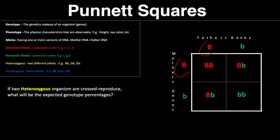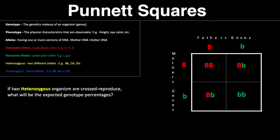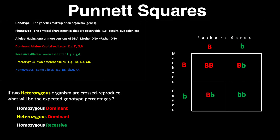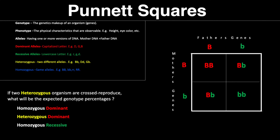To reiterate: if you take a capital B from mom and a capital B from dad, you get two capital Bs. If you take a capital B from mom and a lowercase b from dad, you get one capital B and one lowercase b in the second and third squares. And in the fourth square, you get two lowercase Bs. To calculate genotype: how many homozygous dominants are present? Only one — and since one box equals 25%, our homozygous dominant comes in at 25%.